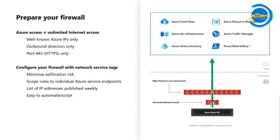You can minimize exfiltration risk by scoping rules that allow outbound traffic specifically in these ways. Microsoft publishes the list of Azure IP addresses weekly, and Azure Stack HCI is part of that. You can get that list — what's called network service tags — and apply it to your firewall configuration. You can also do automation with scripts. If you don't have access to PowerShell Gallery, you need to manually transfer the modules for registration. And you have to do these permissions both on the Defender Firewall and through any perimeter firewalls in your environment.